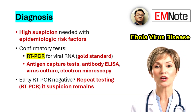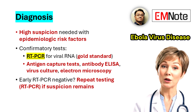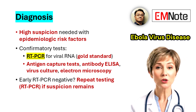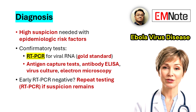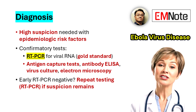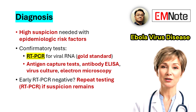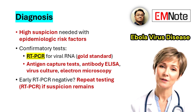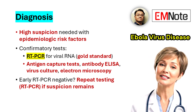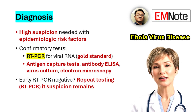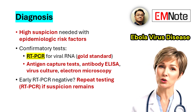Diagnosing Ebola virus disease early is challenging because of the nonspecific nature of the initial symptoms. A high index of suspicion is necessary for individuals with a history of travel to or residence in areas with active outbreaks, or those who have had contact with suspected or confirmed Ebola virus disease cases. Laboratory confirmation is essential. The most common method is the detection of viral RNA in blood or body fluids using reverse transcriptase polymerase chain reaction, or RT-PCR. Viral RNA typically becomes detectable within a few days after symptom onset. Other diagnostic methods include antigen capture detection tests, antibody capture enzyme-linked immunosorbent assays, virus isolation by cell culture, and electron microscopy.